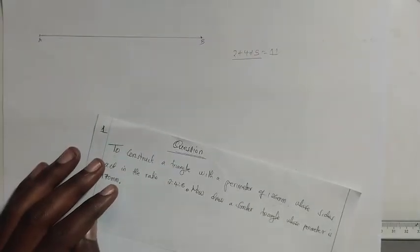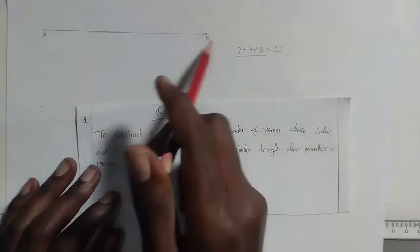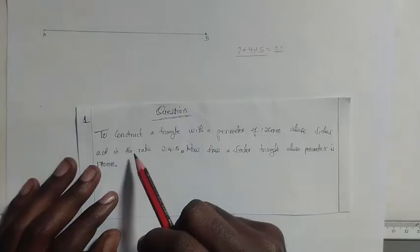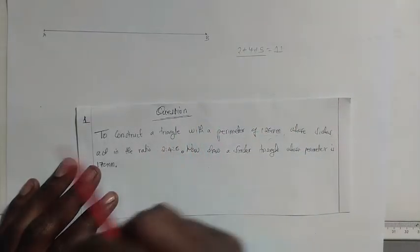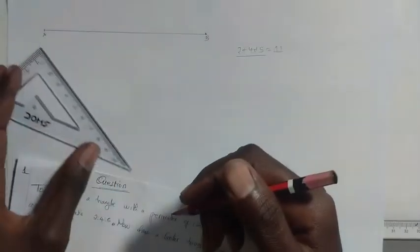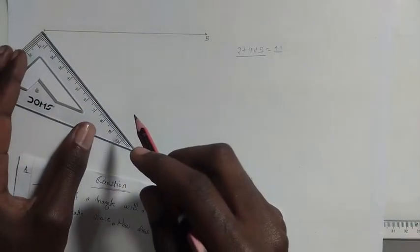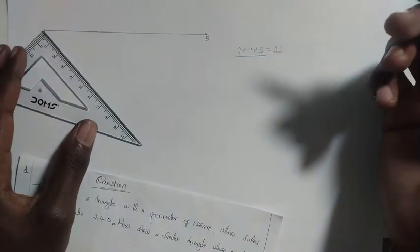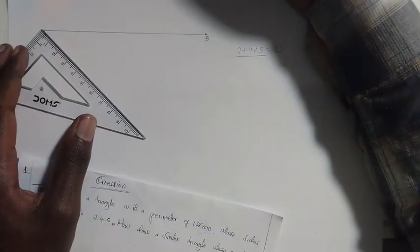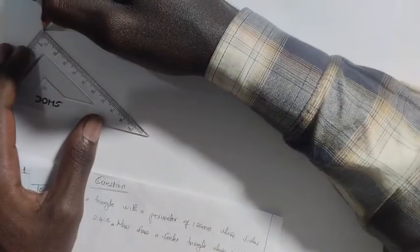To divide line AB into 11 equal parts, draw a line from point A at any distance and at any angle with the horizontal — let's say approximately 45 degrees.